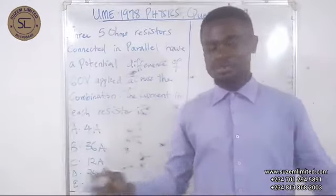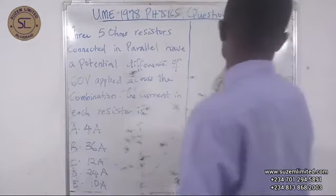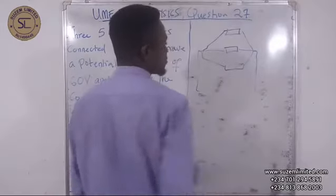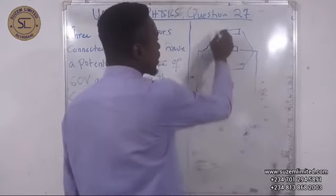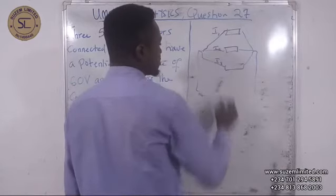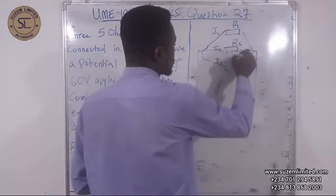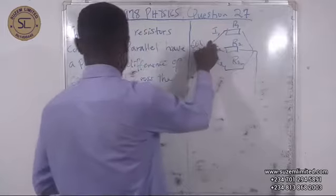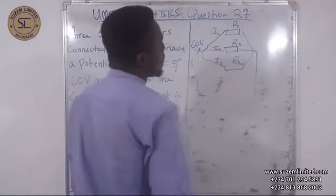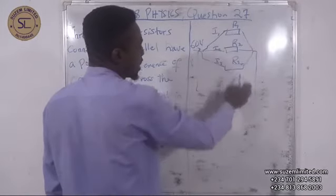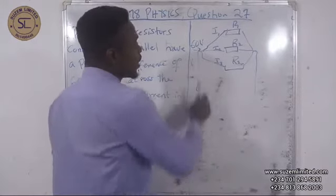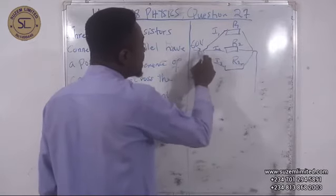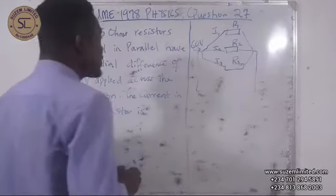When resistors are connected in parallel, the ends are joined together. The potential difference across them is the same, but the current through each resistor differs. The current through R1 is I1, through R2 is I2, and through R3 is I3. The potential difference across all of them is 60 volts.